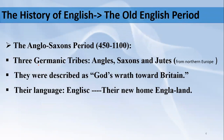Starting with the Old English period, let's talk first about the people who spoke English in that era and the place where this language came into being. Then we will move to the linguistic features used in the Old English period. The Old English period is also called the Anglo-Saxon period.